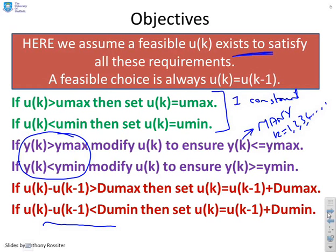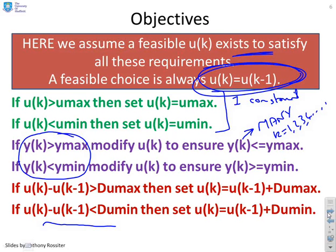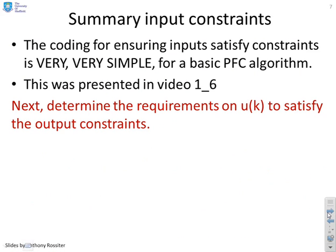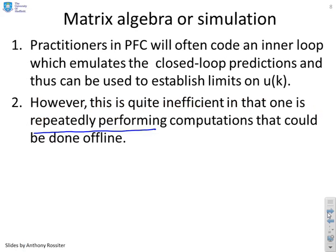We assume a feasible U(k) exists to satisfy the requirements, and in particular, that you can always choose the input to be the same as its previous value. That's a weak assumption in general where you have disturbances and uncertainty, but guaranteeing feasibility is very challenging and we don't want to go there. The coding for input constraints is very simple and was covered in video 1.6. Next, we want to think about how to satisfy output constraints.